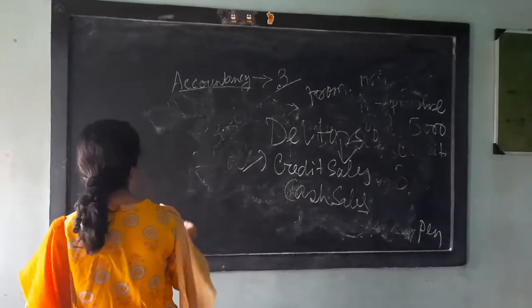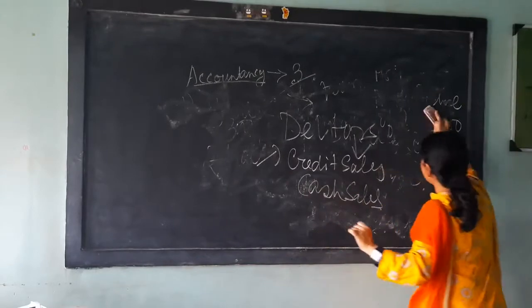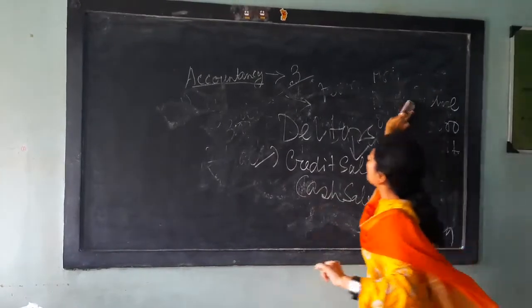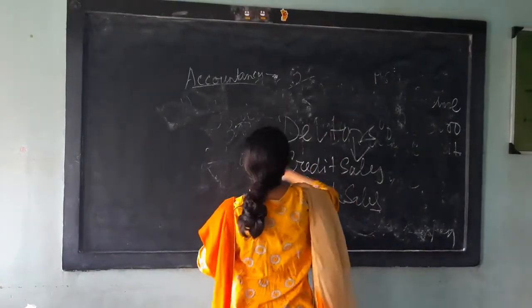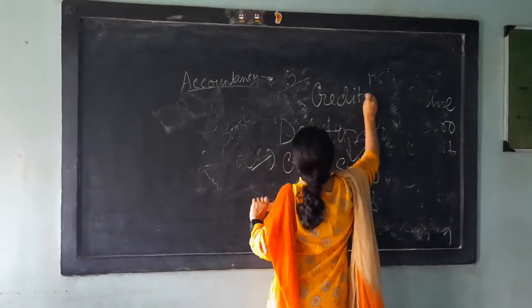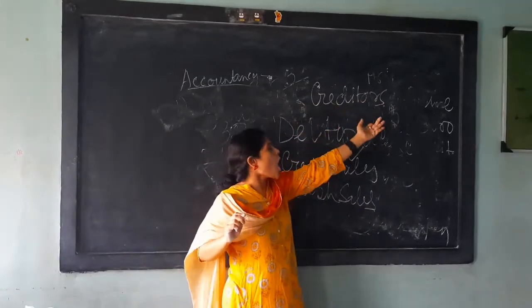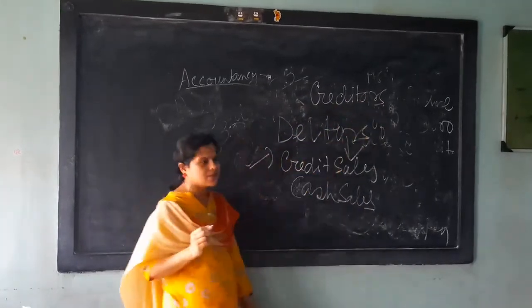Third one, I am talking very important, relevant to business. That is known as creditors. Creditors are those persons who gives money or who gives loan to the business. This is known as creditors.